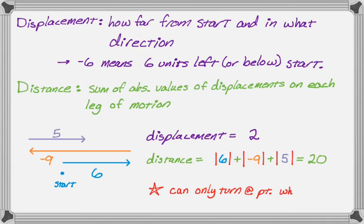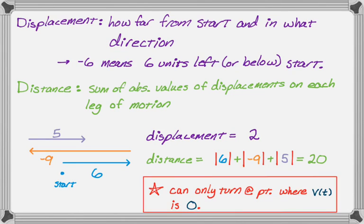A key idea is that you can only turn around — change direction — at a point where the velocity is zero. So the process of finding distance traveled is going to involve first finding when velocity is equal to zero. Let's do an example.